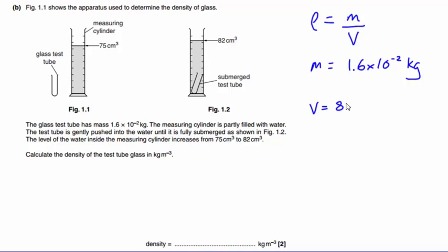So 82 minus 75 centimeters cubed, so that is 7 centimeters cubed.